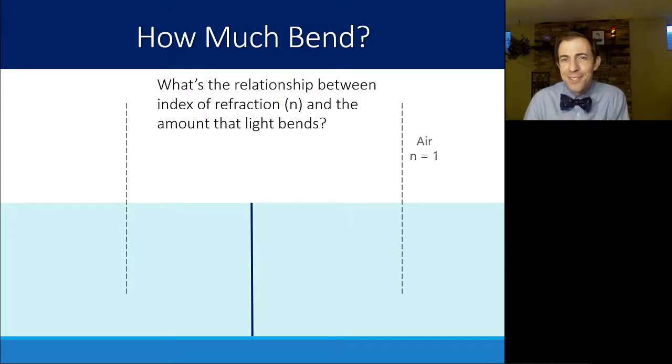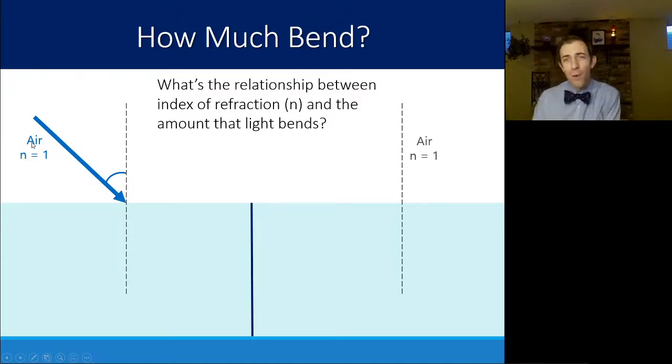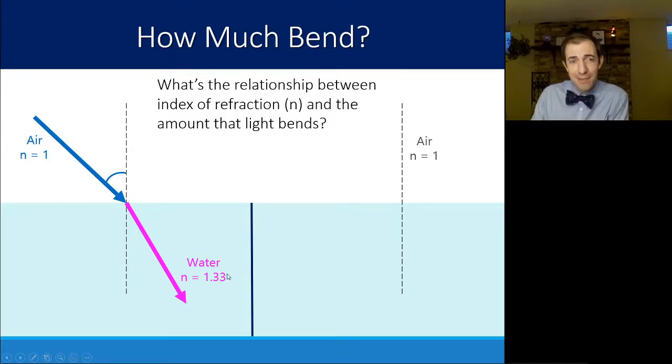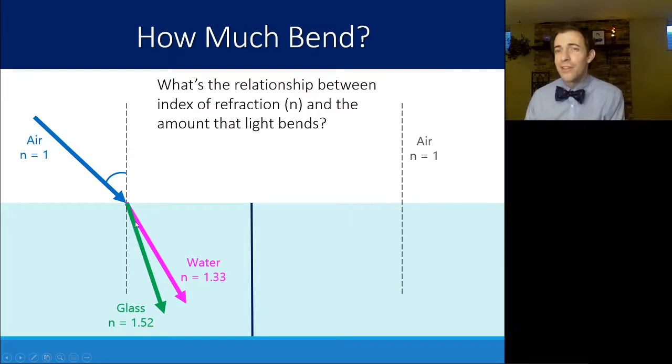So how much do these bend? The relationship between the index of refraction and the amount that light bends is really important. And it's always a relative thing. So if I have something going from air into something more optically dense, the bigger the difference, the more the bend. So in this case, if I'm going into water, I will bend because 1 and 1.33 are different. And the amount of difference will give me how much the bend is. If I go through something more optically dense like glass, I'm going to bend even more. So air and glass have an even larger difference in their index of refraction. So that results in an even larger bend. The larger the difference, the larger the bend.